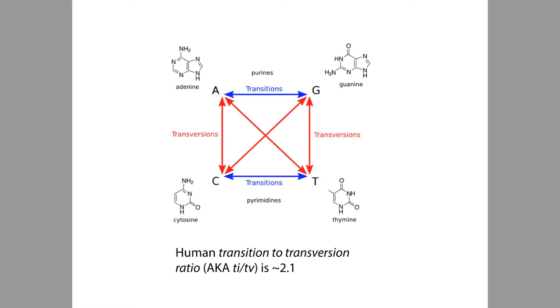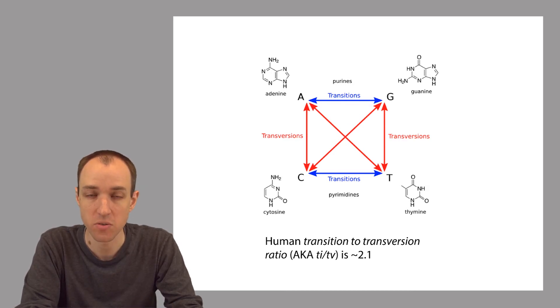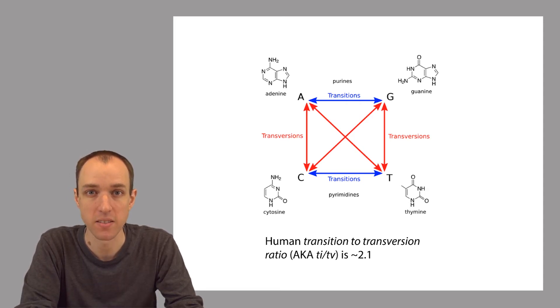All other kinds of substitutions are called transversions. If you just enumerate the possibilities, you'll see that there are twice as many kinds of transversions as there are kinds of transitions. So you might think that transversions are going to be something like twice as frequent as transitions. But it turns out that in reality, if you look at the substitutions that differentiate the genomes of two unrelated humans, transitions are actually about twice as frequent as transversions — the other way around from what you would expect. So in our penalty scheme, we might want to penalize transversions more than transitions.